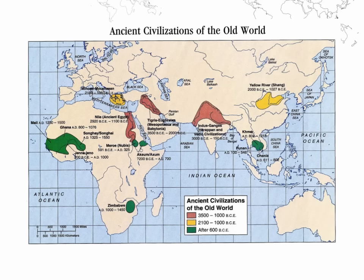Let us look at the civilization map here. We can see that the first three civilizations — the Sumer, Nile Valley, and Indus Valley — are all along the same line. You can even extend this all the way to the Yellow River and the Yangtze. Interestingly, if you plot the major religions of the world, such as Judaism and Christianity, Islam, Hinduism, Jainism, Sikhism and Buddhism, and Taoism and Confucianism, they are all along the similar line.